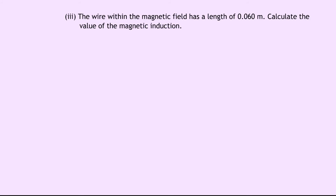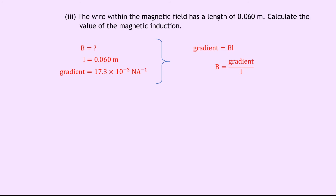Part A3 says the wire within the magnetic field has a length of 0.060 metres — calculate the value of the magnetic induction. Using our relationship that the gradient = B × L, with L = 0.060 m and gradient = 17.3×10⁻³ N/A, we rearrange to get B = gradient/L = 17.3×10⁻³ / 0.060, which gives a final answer of 0.29 tesla.